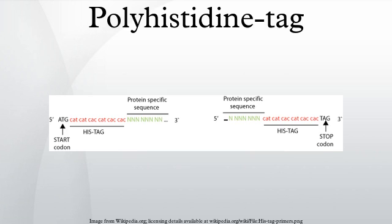A polyhistidine tag is an amino acid motif in proteins that consists of at least 6 histidine residues, often at the N or C terminus of the protein. It is also known as hexahistidine tag, 6x-HisTag, His-6 tag, and by the trademarked name HisTag.